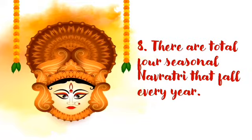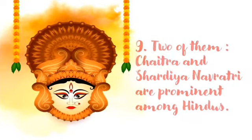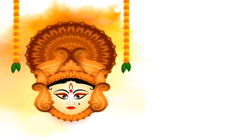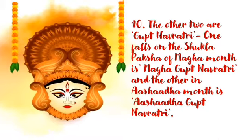There are total 4 seasonal Navaratri that fall every year. Two of them, Chaitra and Shardiya Navaratri, are very prominent among Hindus. The other two are Gupta Navaratri — one falls on the Shukla Paksha of Magha month, called Magha Gupta Navaratri, and the other in Ashadh month is Ashadh Gupta Navaratri. I think this is new for you.